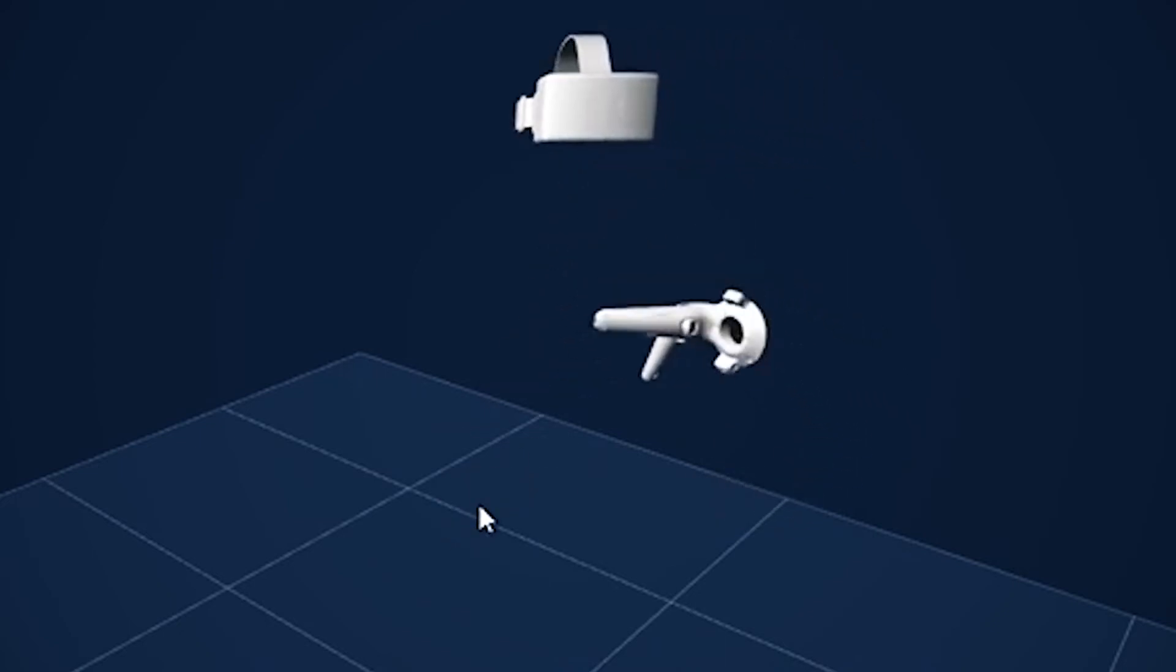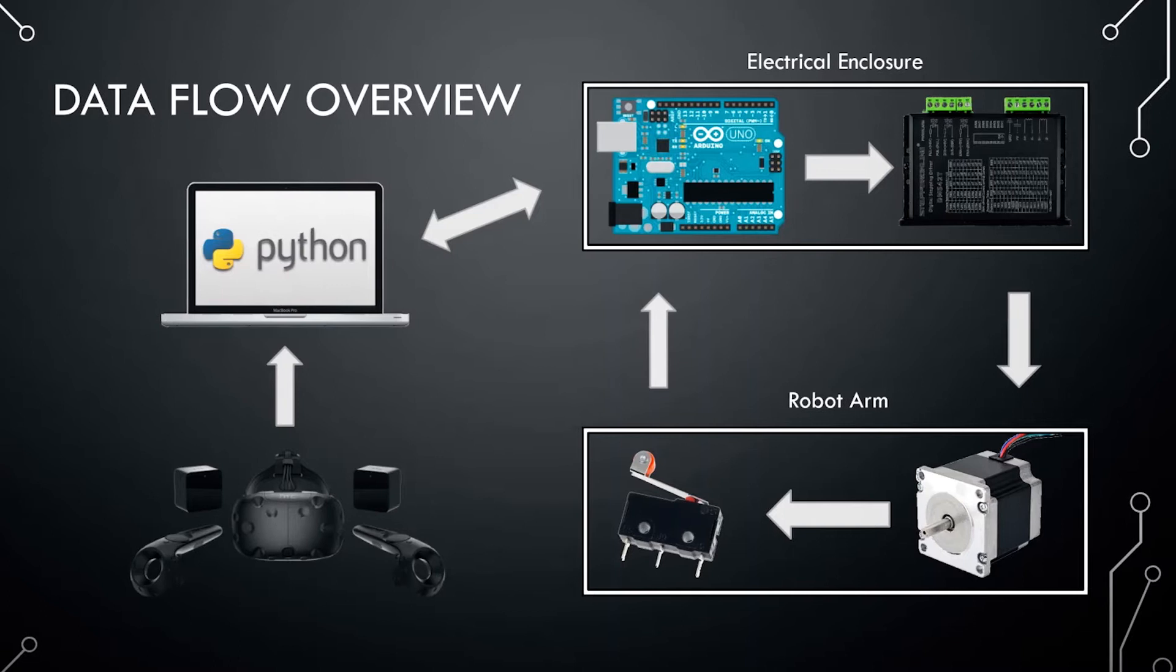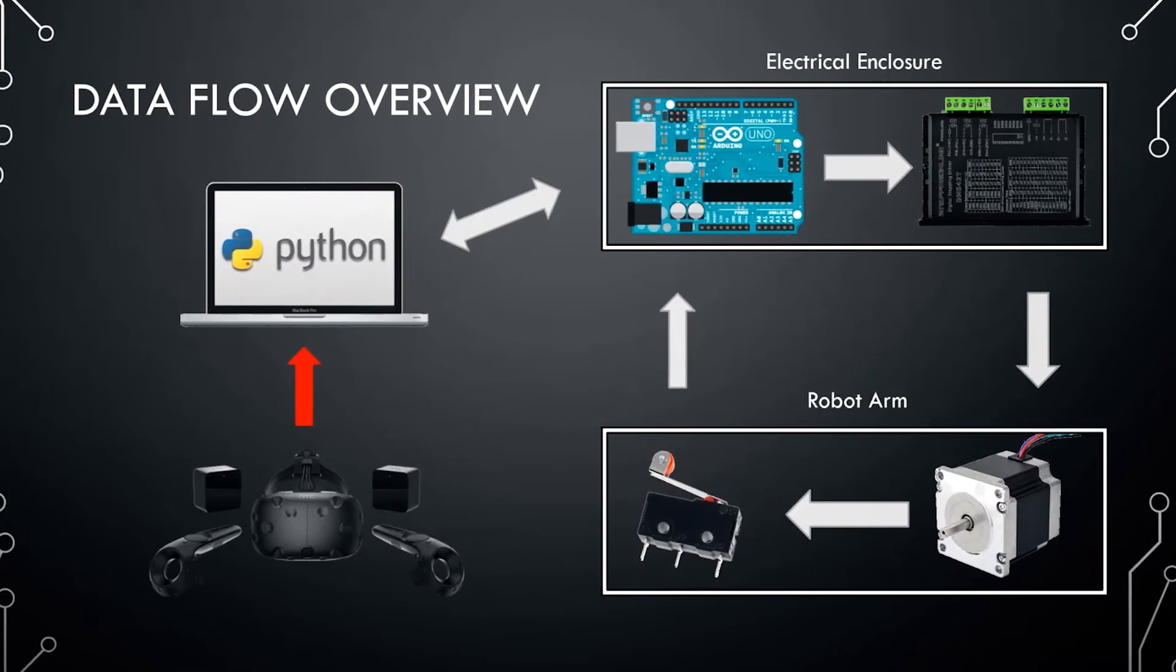The 3D live position information of the controller will be sent to our main controller and processed through the open-source robotics arm software to figure out how much each of the 6 joints should move in order to get the end of the arm, called the end effector, to correct position in 3D space.